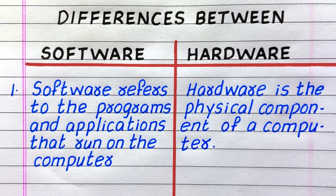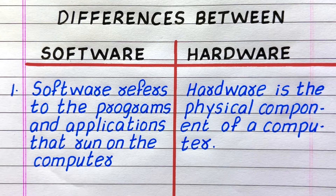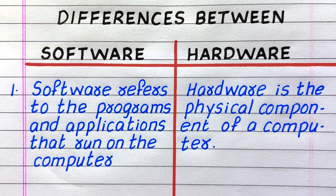First difference: software refers to the programs and applications that run on the computer, while hardware is a physical component of a computer.